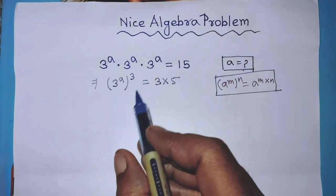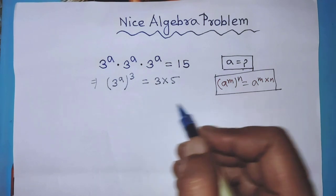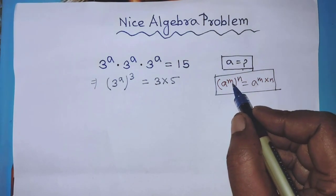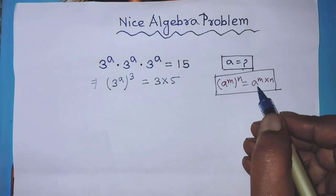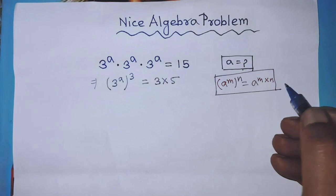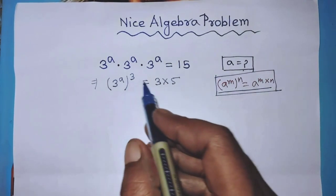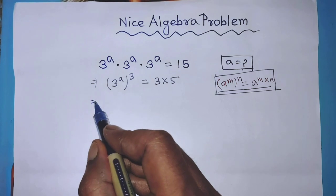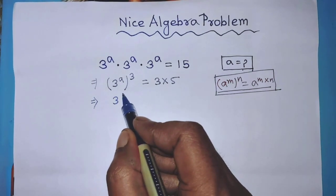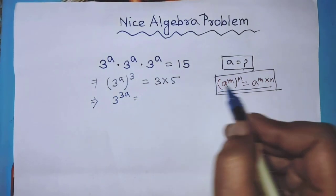To simplify the left hand side of this equation we have to apply the formula: a to the power m, whole to the power n, is equal to a to the power m times n. So according to this formula we can write from the left hand side: 3 to the power 3 times a is equal to 3 times 5.